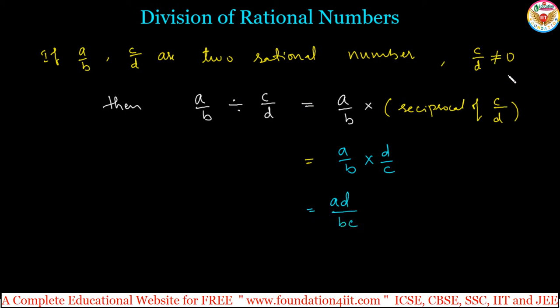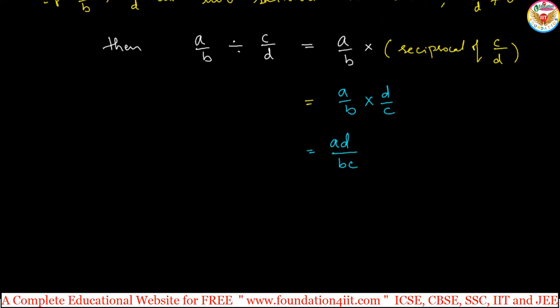So here, if c by d is 0, what will happen? Then a by b divided by 0, so it is undefined. Division by 0 is not defined; there is a rule. And anything we want to divide the same, let us see with examples, just only the inverse of multiplication, remember that.